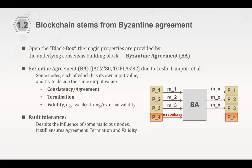If we open up the black box of blockchain, what's behind its magic properties? Byzantine agreement — a primitive proposed almost 40 years ago by Lamport — is key. In this primitive, a set of nodes each have an input value and try to decide one common output. We have three properties: agreement (everyone outputs the same value), termination (every honest node must output after finite interactions), and validity (the output must be something useful).